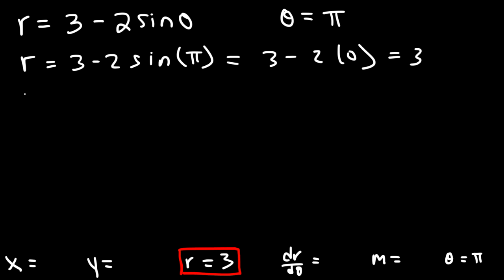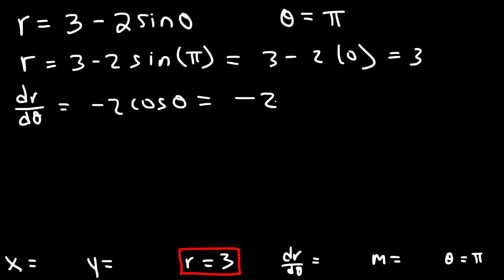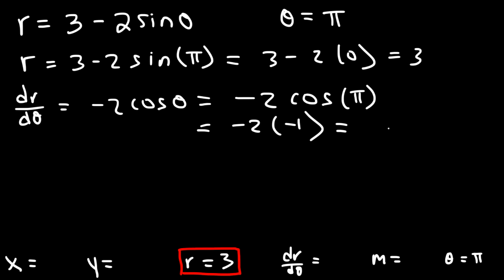Now let's calculate dr/dθ. The derivative of 3 − 2sin(θ) is −2cos(θ). Evaluating at θ = π: cos(π) = −1, so dr/dθ = −2·(−1) = 2. So dr/dθ = 2.